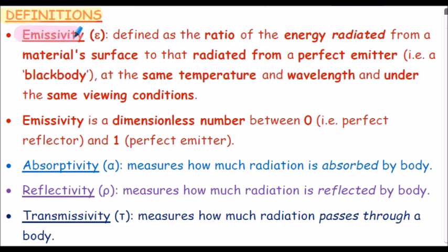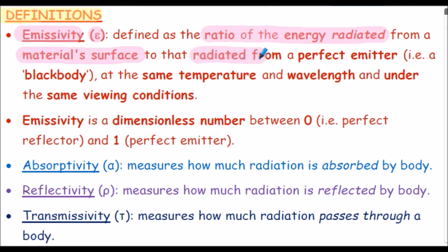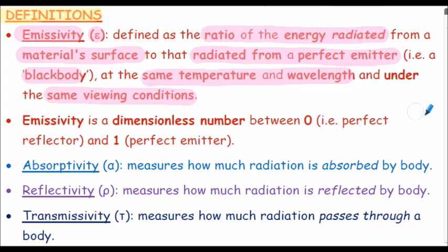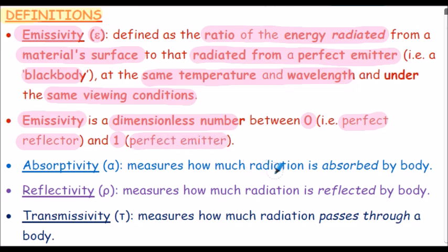Here are some definitions for your reference. Emissivity, symbol lowercase epsilon, is defined as the ratio of the energy radiated from a material surface — the body's surface — to that radiated from a perfect emitter, that's usually termed a black body, at the same temperature and wavelengths, under the same viewing conditions. Emissivity is a dimensionless number ranging between 0 for a perfect reflector and 1 for a perfect emitter.